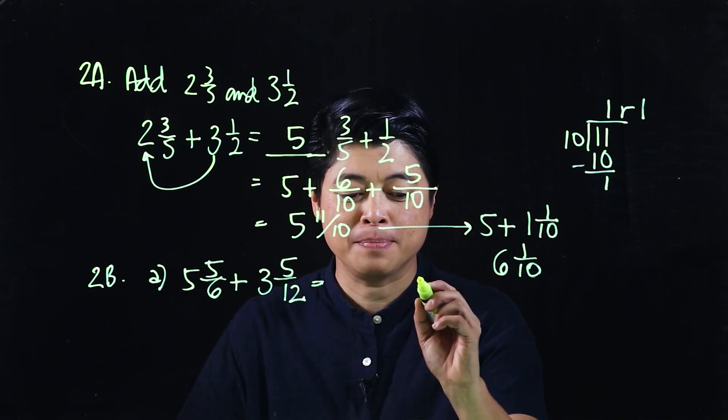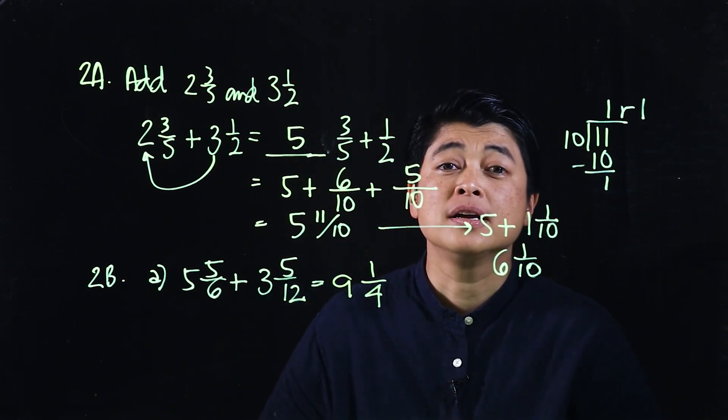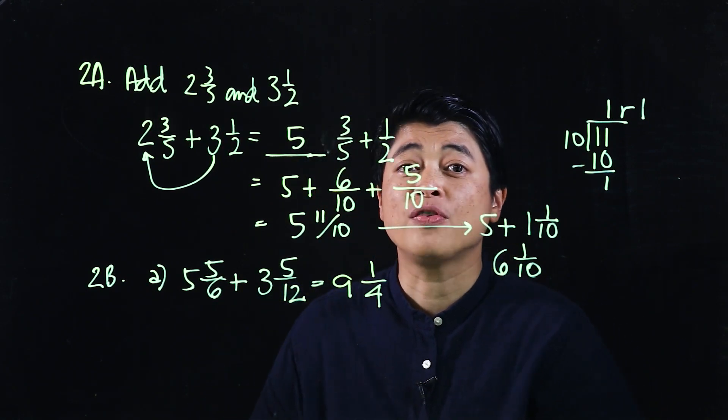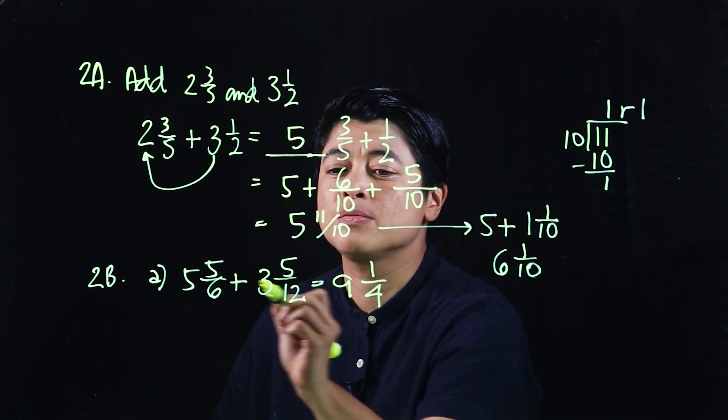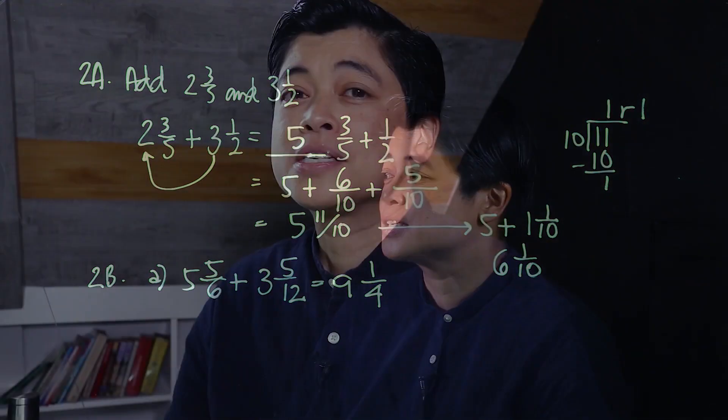As computed earlier in the calculator, the answer here would be 9 and 1/4 as a mixed number. It doesn't specify what form it wants, but since we started with mixed numbers, we should put our answer as a mixed number as well.